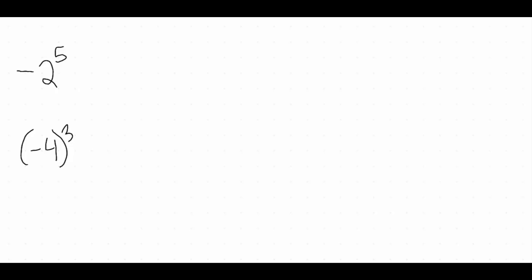Taking a look at the top example, negative two to the fifth. When we're evaluating an exponent, we want to make sure we understand what is our base and what is our exponent. The base is the bottom number, the big number. In this particular example, the one at the top, our base would be the two.